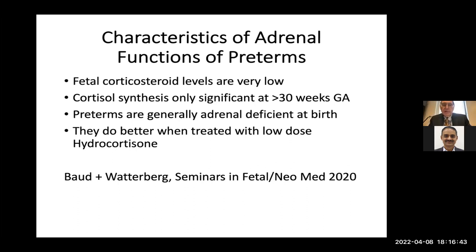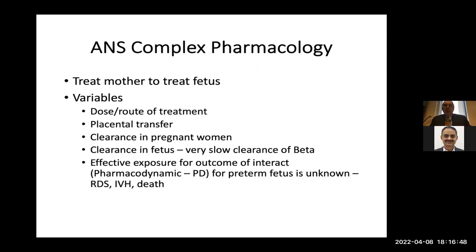The pharmacology is complicated because we're treating the mother to treat the fetus. The variables are the dose, route, placental transfer, clearance in the pregnant woman, and clearance in the fetus — which is very slow for betamethasone. The other issue is: what is the dose for the effective pharmacodynamic outcome we want — for example, preventing IVH, RDS, or death? We actually don't know what that dose is for each of those outcomes.